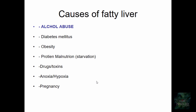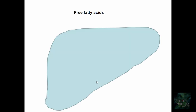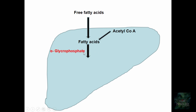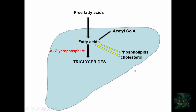To understand the etiopathogenesis, let us look at normal fat metabolism. Free fatty acids — either from the diet or from adipose tissue — enter the liver. Fatty acids are also synthesized from acetyl-CoA. These fatty acids, with the action of alpha-glycerophosphate, are esterified to form triglycerides. Small amounts of fatty acids are converted to cholesterol, phospholipids, and oxidized to ketone bodies.